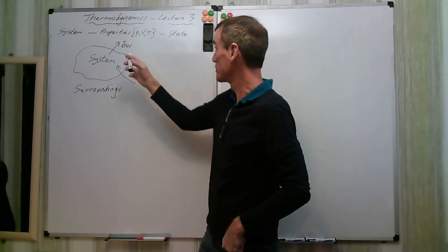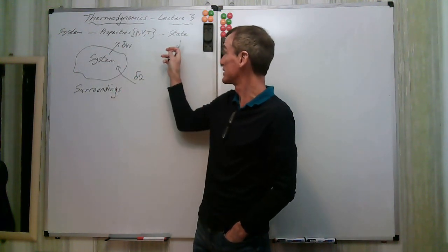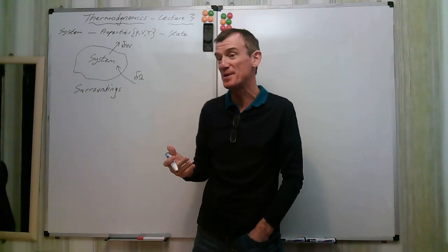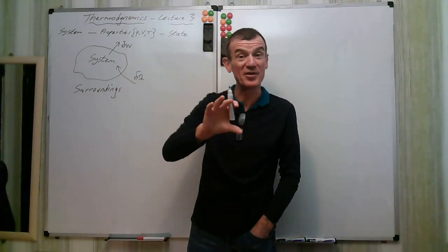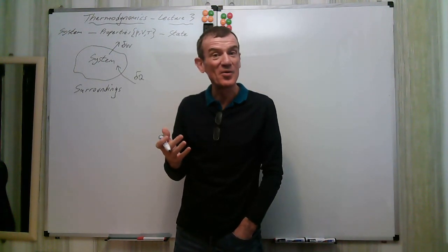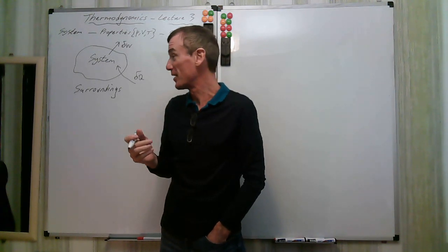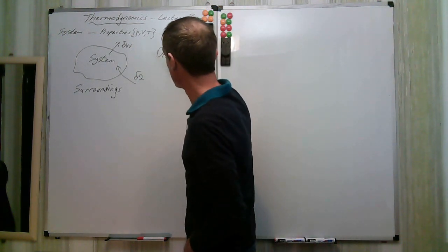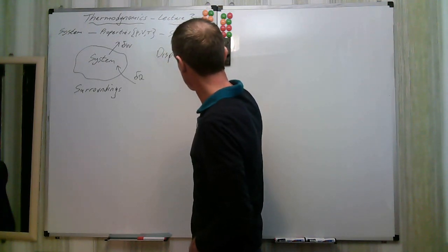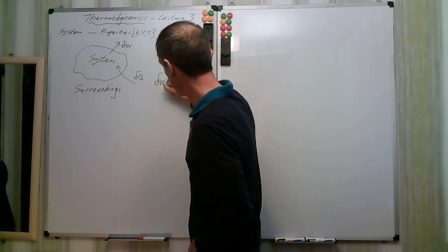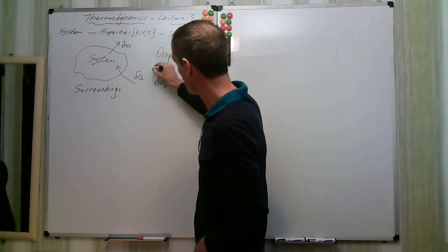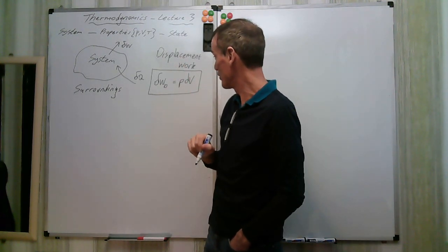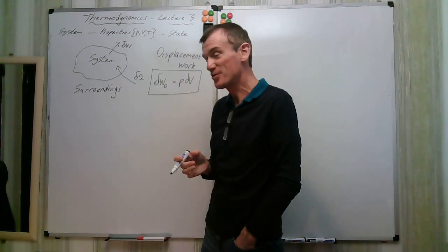We also identified various processes on the state diagram. We defined a process to be a path in state space, and introduced important polytropic processes. For displacement work, we defined delta W_D equal to P dV. For shaft work, it was associated with torque T dθ.